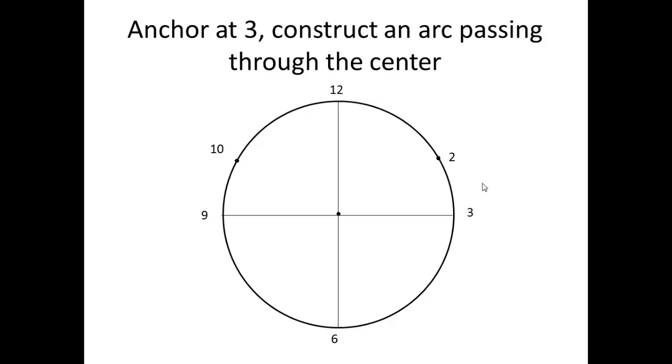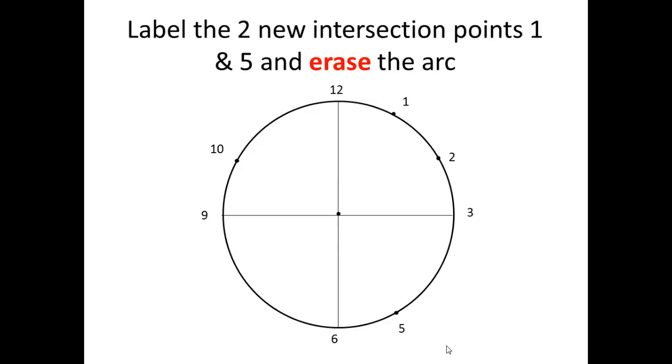Now you're going to anchor at 3 o'clock. And you're going to construct another arc passing through the center. Of course, your arc will look much sharper and cleaner than mine. You're going to label the two new intersection points, 1 o'clock and 5 o'clock. And do erase the arc.